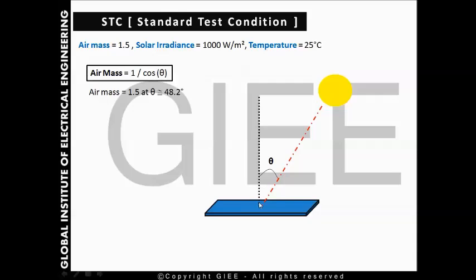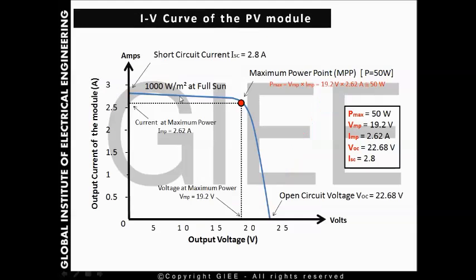Now, what does air mass mean? Air mass equals 1 divided by cosine theta, where theta is the angle between the sunlight line and the perpendicular line on the surface. We use this formula to find the air mass. If the sun is perpendicular to the surface, theta is 0, cosine 0 is 1, so air mass equals 1. But in this test we use an air mass of 1.5, which means theta is 48.2 degrees.